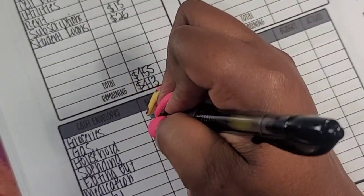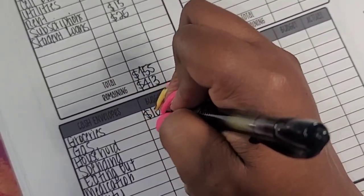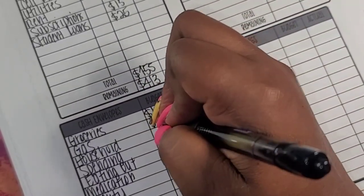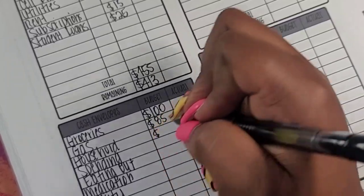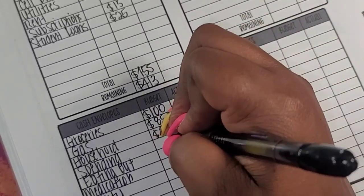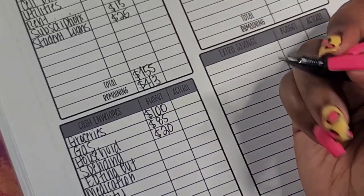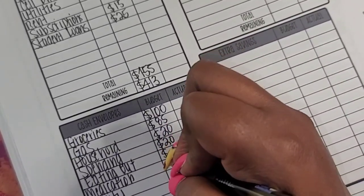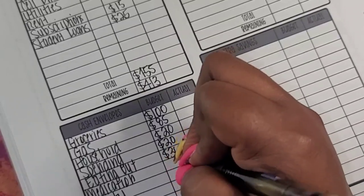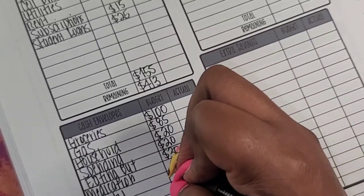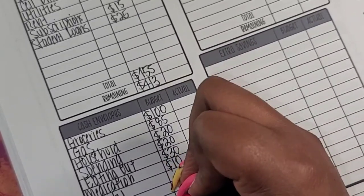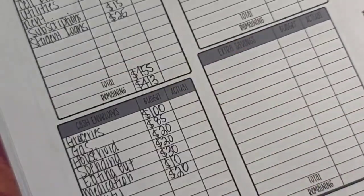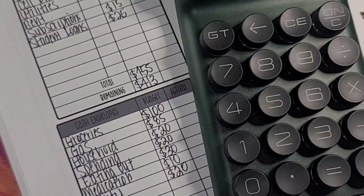So going into my variable expenses, I have a total of $413 to start with. So for groceries, I'm going to do $100. For my gas, I'm going to do $85. For household, I'm going to do $20. Spending is going to get its normal $20. Eating out, let's do $30. Medication, I'm going to do $10. And beauty, we'll get $20. Let's add that up and see how much we have.